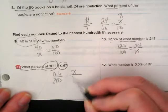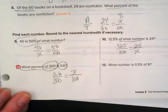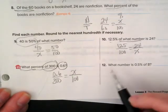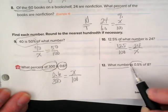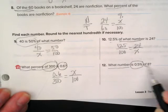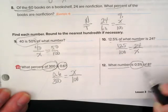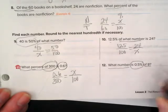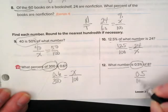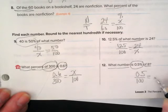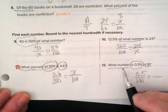Of the 60 books on a bookshelf, where's the 'of'? Right here. So that's my whole. 24 are non-fiction. So we know that this is non-fiction and that this is all the books or the total. 24 is equal to what percent is what the question is asking. So we know we have it set up right.